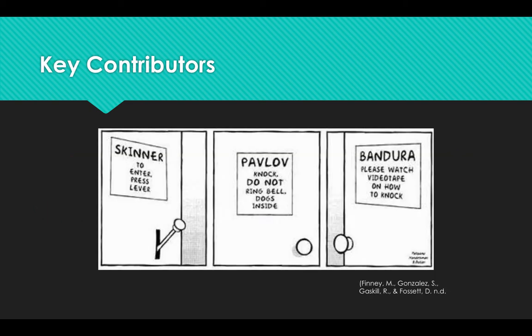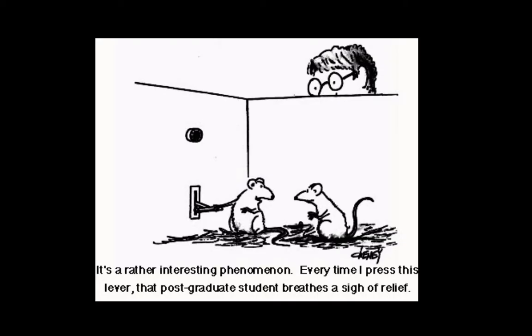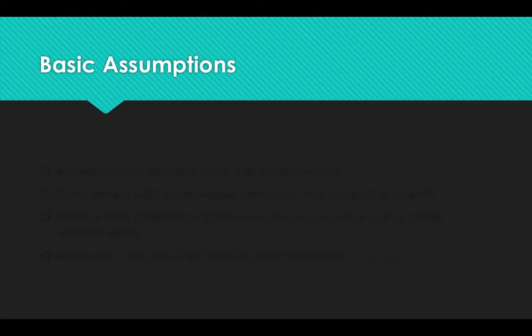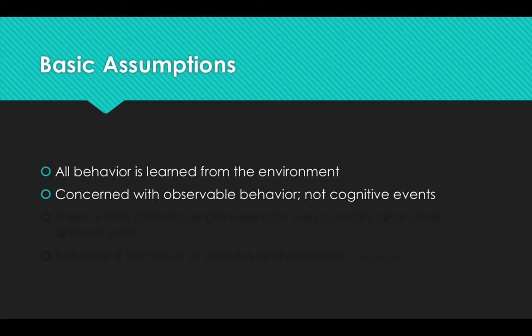Key contributors of behavioral learning theory include its founder B.F. Skinner, Pavlov who studied classical conditioning, and Albert Bandura who used the principles of behavioral learning theory along with cognitivism to develop social learning theory. The basic assumptions of behaviorism include: all behavior is learned from the environment through classical or operant conditioning, and behaviorism is concerned with observable behavior, not cognitive elements like thinking, internal motivation, attitudes, or emotions.